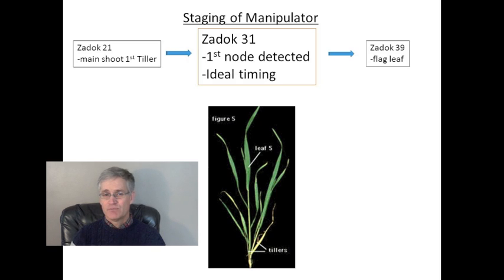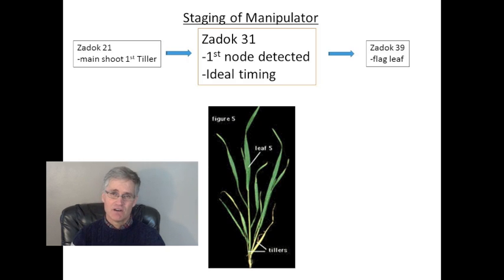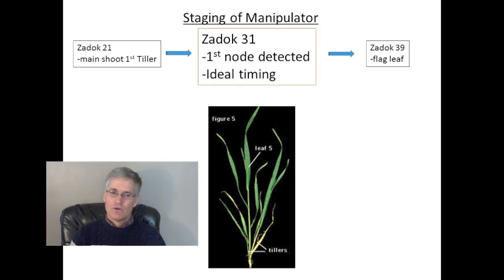The plant in the middle of this picture is considered to be at the ideal stage of Zadok 3-1. The early stage — the herbicide timing stage, Zadok 2-1 — is considered to be less efficacious. Manipulator is an anti-gibberellin, and the major gibberellin production starts at Zadok 3-1 to coincide with stem elongation. Manipulator applied early has no efficacy until Zadok 3-1, so by this time some of the product has been metabolized by the plant. Going early is sort of equivalent to applying a reduced rate.